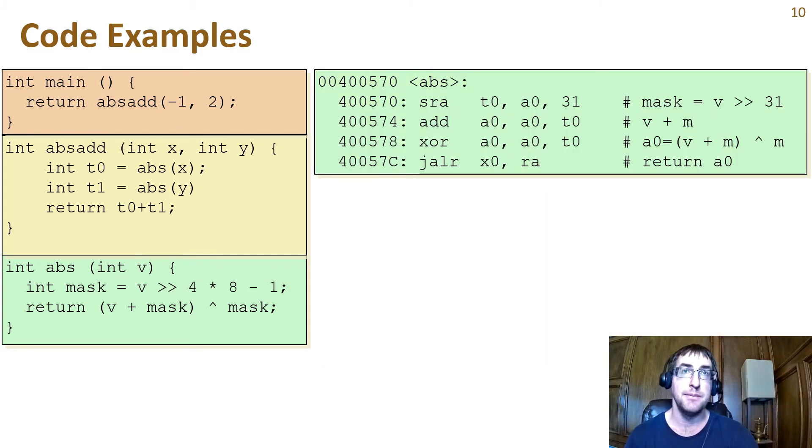Finally, here's the assembly for abs, which we looked at previously. Abs does not itself make any procedure calls, so it will not need to save the return address on the stack. We call a function that doesn't make any function calls a leaf function. Since we talked through this code generation before, we can just move on.